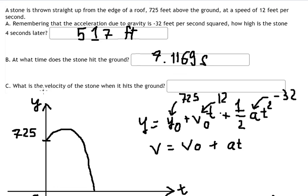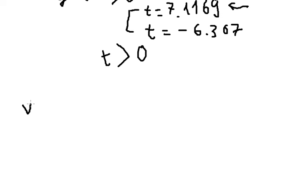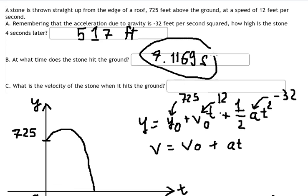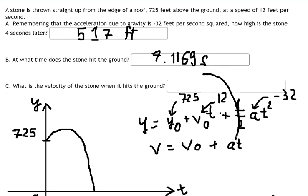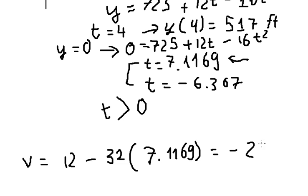The next question is: what is the velocity of the stone when it hits the ground? We use the second formula. V-zero is 12, a is negative 32, and for t we use 7.11169 — the time when it hits the ground. We calculate this and get approximately negative 215.774 feet per second.